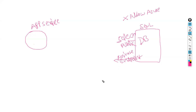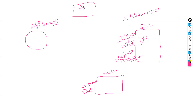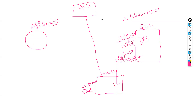This private endpoint requires a VNet. Most organizations maintain a custom DNS on their VNet, pointing to a hub network. A private endpoint is created, and in most organizations, one centralized private DNS zone is used — for example, a separate private DNS zone for App Service and another for SQL database.